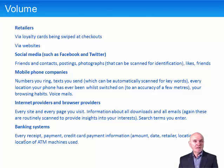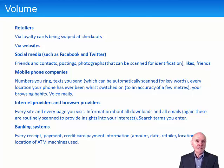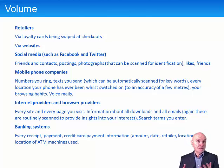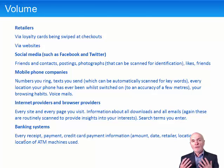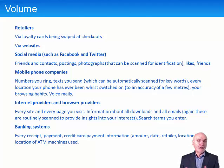Mobile phone companies know who you ring and how long you spend ringing people. They detect patterns — like you always ring home on a Friday evening. They know where you are when you make a phone call because even when you're not using your phone, it is always sending out a signal so an incoming call can find you. Phone companies can triangulate using transmitter masts to find out exactly where you are to within a few metres. They can also look at which pages you've visited while browsing, and if they wanted to, look at your texts and listen to your voicemails.